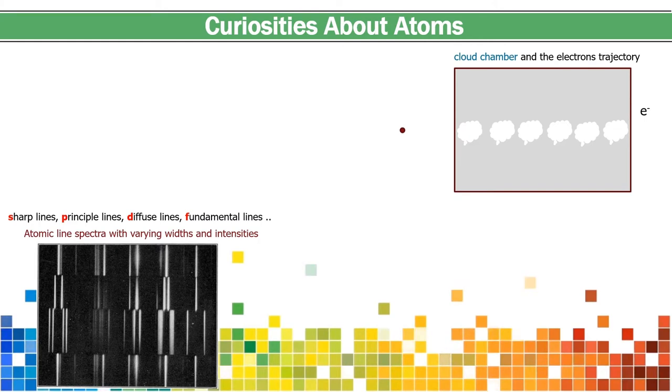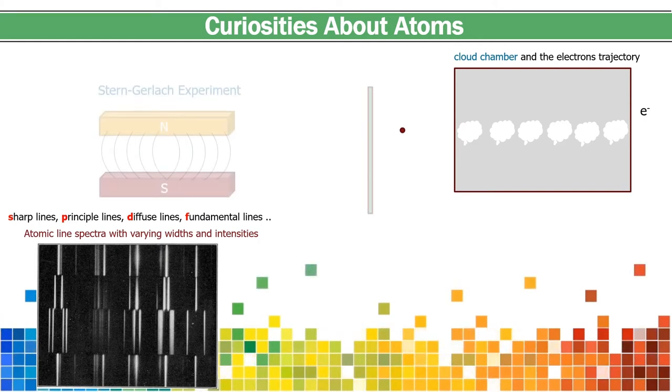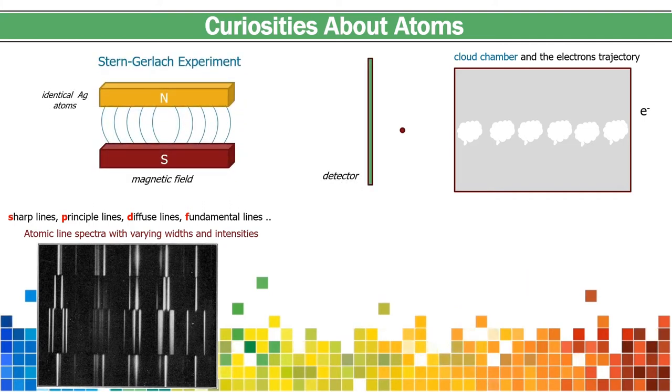In 1922, Otto Stern and Walter Gerlach performed an experiment where they fired silver atoms through a magnetic field and struck a detector. But amazingly, the atoms hit the detector in two distinct locations. We got nothing to explain this result. Why would two identical atoms self-select into two different types of atoms on the detector?